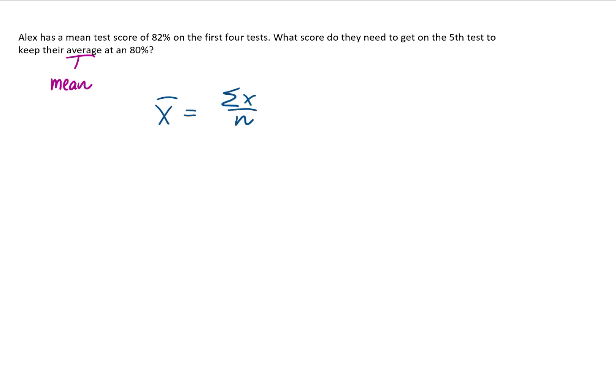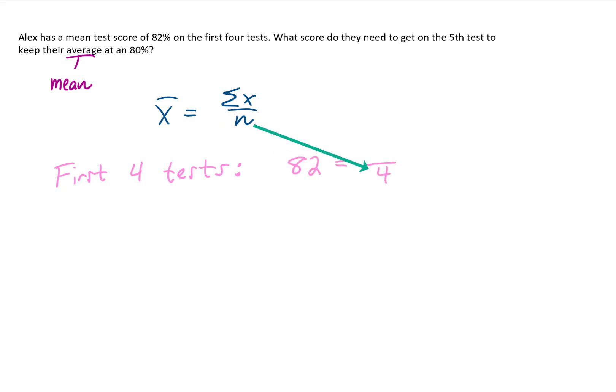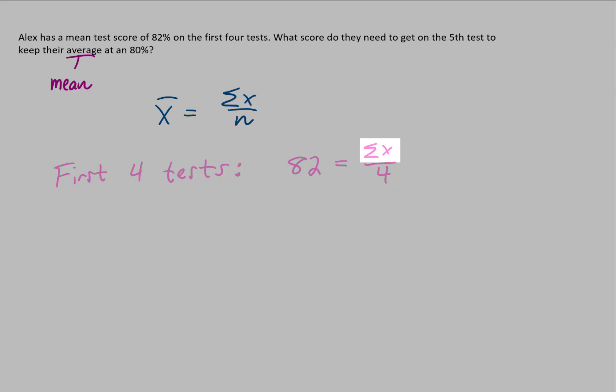Our formula for mean is the sum of all data values — in this case all test scores — divided by the number of test scores. We're given that Alex's mean for the first 4 test scores is 82%, with n equal to 4. That information allows us to find the sum for Alex's first 4 test scores.